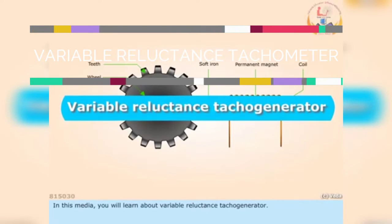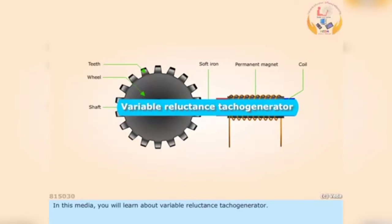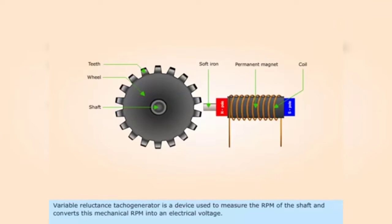In this media you will learn about Variable Reluctance Tachogenerator. Variable Reluctance Tachogenerator is a device used to measure the RPM of the shaft and converts its mechanical RPM into an electrical voltage.